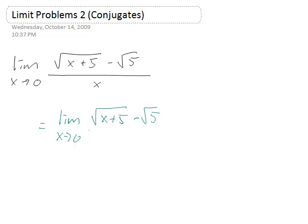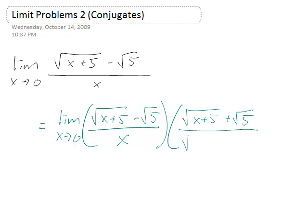One way of doing this problem is to multiply the fraction that you have by the conjugate of the numerator divided by itself.